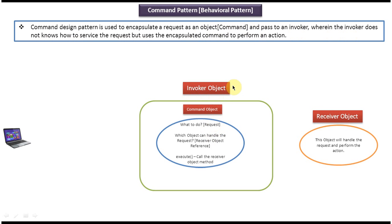The invoker doesn't know how to handle the request, so it just calls the execute method of the command object. The execute method in turn calls the receiver object's method, which handles the request, performs the action, and fulfills the request.